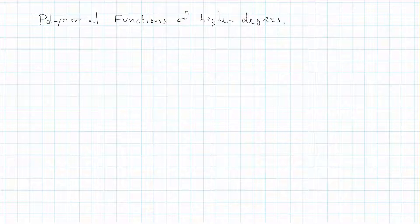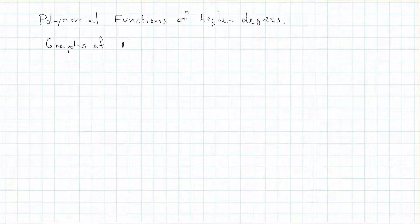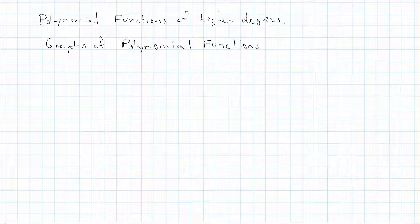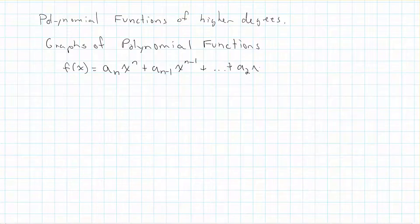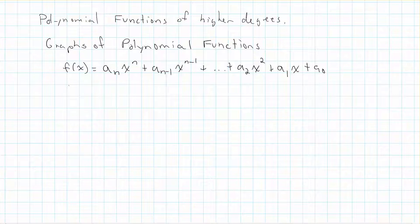Let's first talk about some properties about the graphs of polynomial functions. And maybe before we get too far into the graphs, let's just write a general form of a polynomial equation. It's a_n x^n plus a_(n-1) x^(n-1) plus dot dot dot plus a_2 x squared plus a_1 x plus a_0. Remember here, these a_n's are just real numbers, with the exception that a_n can't be 0, and that n are non-negative integers. So n is also the degree of the polynomial.